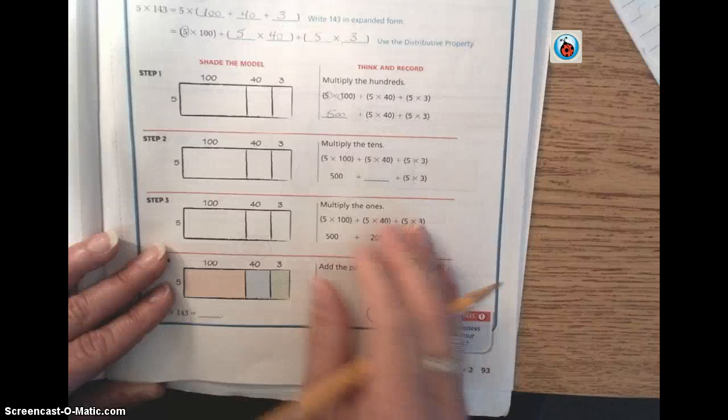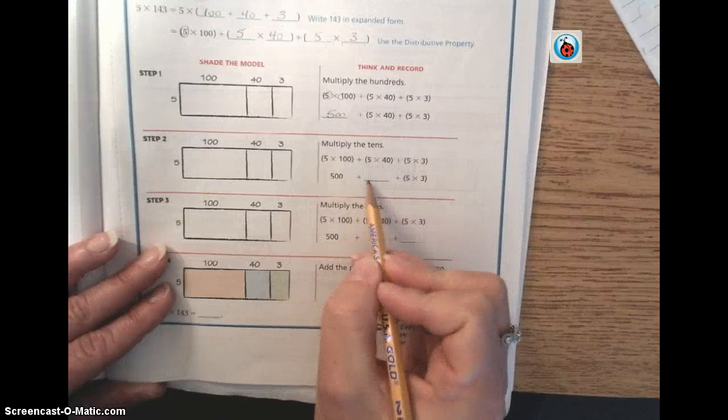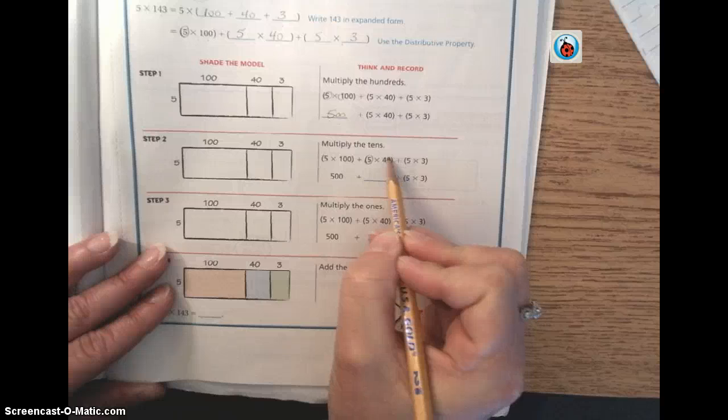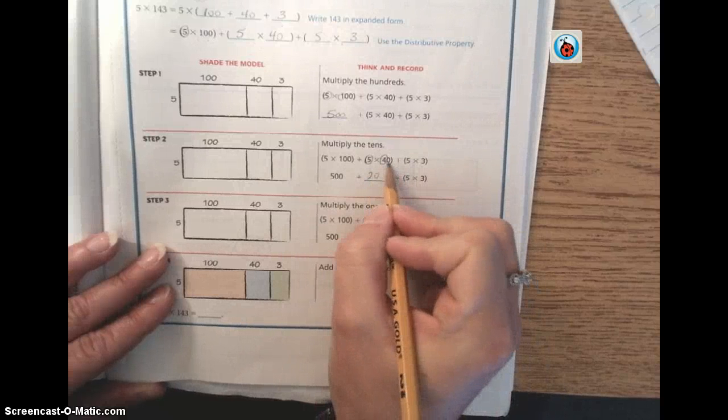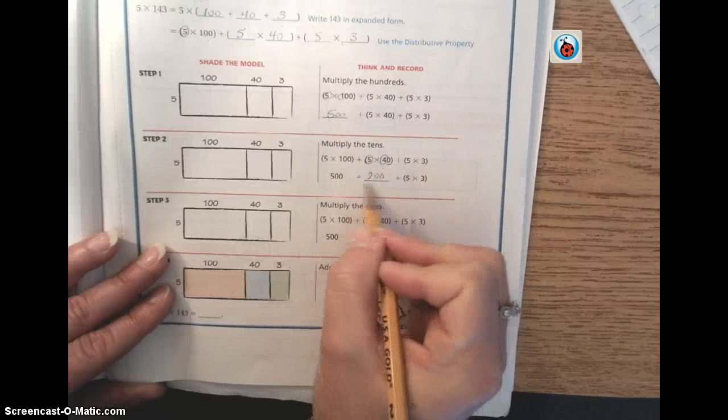Step 2, multiplying the tens. Again, using mental math, we have 5 times 4 is 20. We have one zero from our factor, we know that's 200.